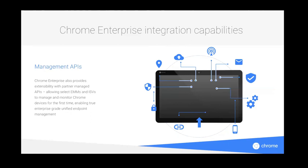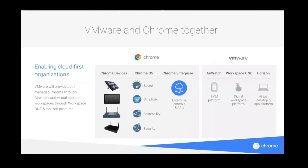VMware Workspace One, Horizon — all of those VMware products are now capable of integrating with Chrome OS. As we open the doors to Q4, you'll see the same API management capabilities extended to other partners as well. This is really a push for cloud-first organizations — managing Chrome through AirWatch and wrapping virtual applications through Workspace One and Horizon gives you the ability to target customers already using this solution, with brand new control over a litany of new devices and use cases.